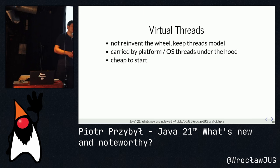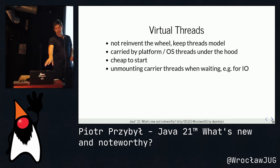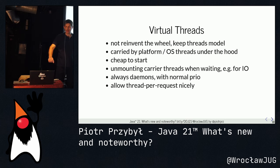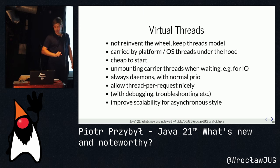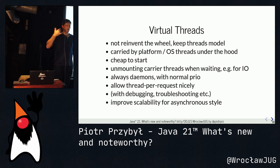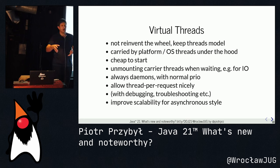Virtual threads are nice because we're not reinventing the wheel — they still implement java.lang.Thread. Under the hood they're carried by platform or OS threads. They're cheap to start, and chunks of their stack live on the heap. When waiting for IO, they unmount the carrier thread — the platform thread — and they're always daemons with normal priority, allowing thread-per-request patterns because we can have hundreds of thousands of them.